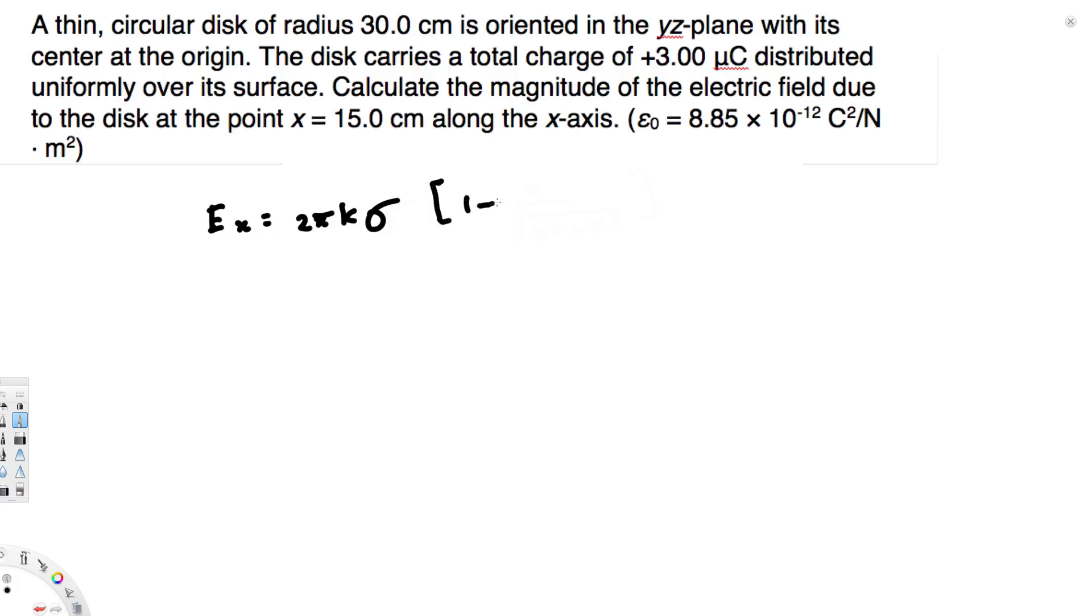times [1 - x/√(x² + r²)]. Now here, σ is the charge density, x is the point distance—that's given as 15 centimeters—and r is the radius of the disk, which is 30 centimeters.